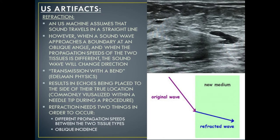Our next type of velocity error artifact is known as refraction. Refraction occurs because an ultrasound machine assumes that sound travels in a straight line. However, when a sound wave approaches a boundary at an oblique angle and when the propagation speeds of the two tissues are different, the sound wave will change direction — known as refraction, or transmission with a bend. This results in echoes being placed to the side of their true location, commonly visualized within a needle tip during a procedure, where the needle tip looks like it is bent. Refraction requires two things: different propagation speeds between the two tissue types, and oblique incidence.